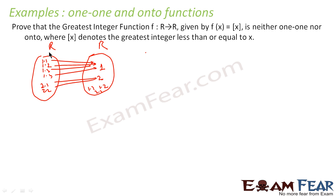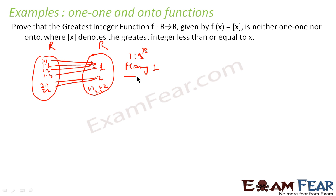If you see here, for the output value 1, there are so many arrows coming in, so it is not one-one. For 2 also, there are many arrows coming in, so it is not one-one — it is many-one actually.